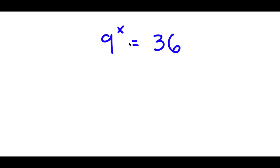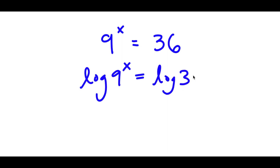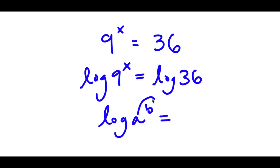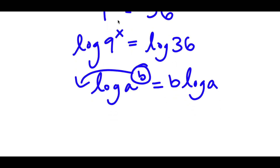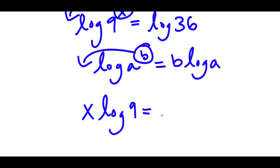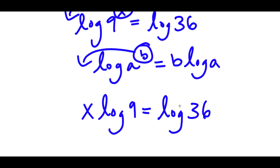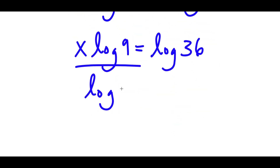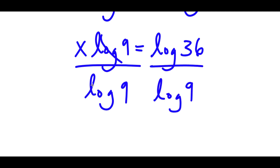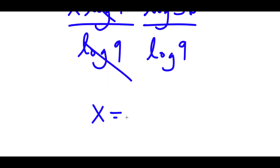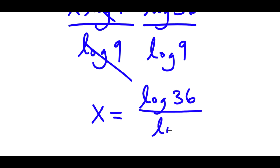In this problem, I have 9 to the power of x is equal to 36. To solve this, I'm going to first start by taking the log on both sides. Now I have log 9 to the power of x is equal to log 36. If I have something in the form log a to the power of b, I can move b to the front, so this equals b times log a. So I have log 9 to the power of x, and I can move x to the front. Now I have x times log 9 is equal to log 36. If I divide both sides by log 9, these two cancel out, and I get x is equal to log 36 over log 9.